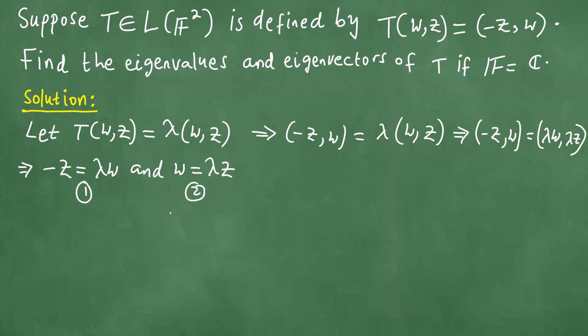This implies we can put equation 2 into equation 1. So -z = λ(λz), which means -z = λ²z.